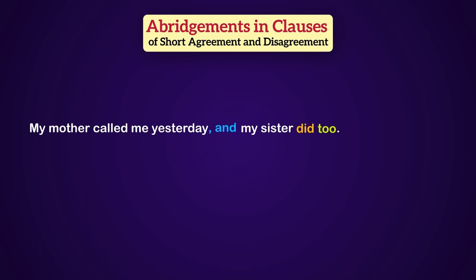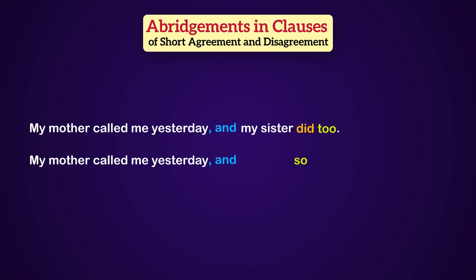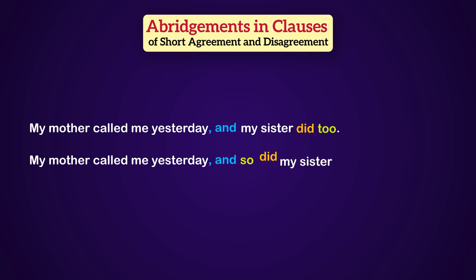Now we use the other way to have another form of abridged clause. 'Too' changes into 'so' and then moves to the beginning of the second clause, and finally we reverse the subject and auxiliary: My mother called me yesterday, and so did my sister.